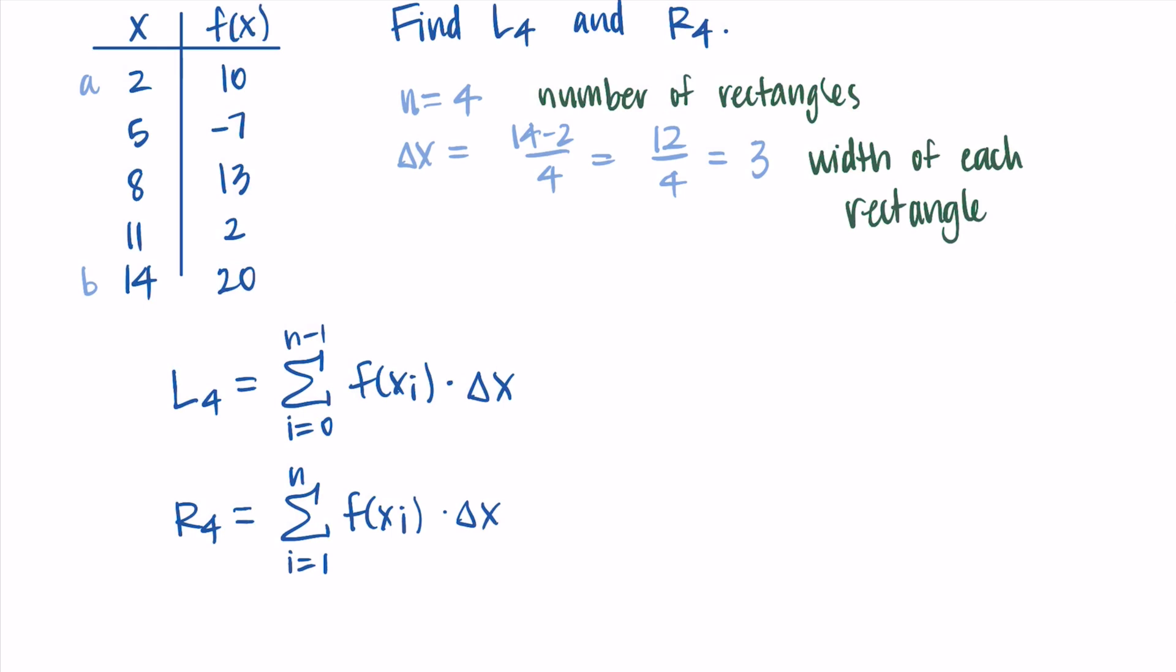So to help us put in all these values, I'm just going to label the data in our table. So the first point is x sub 0, x sub 1, x2, x3, x4. That's from a to b. And then our outputs are just f of whatever that input was. So f(x_0), f(x_1), etc. Then I just have to sort of put all this information into the Riemann sum formula.